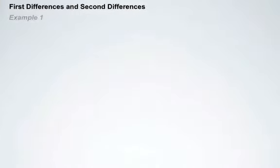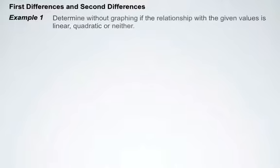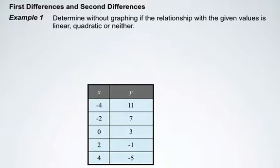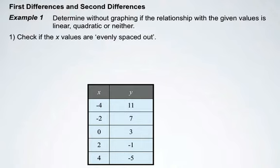First and second differences. Example 1. Determine without graphing if the relationship with the given values is linear, quadratic, or neither. First, we'll check if the x values are evenly spaced out. This is an important step to take.